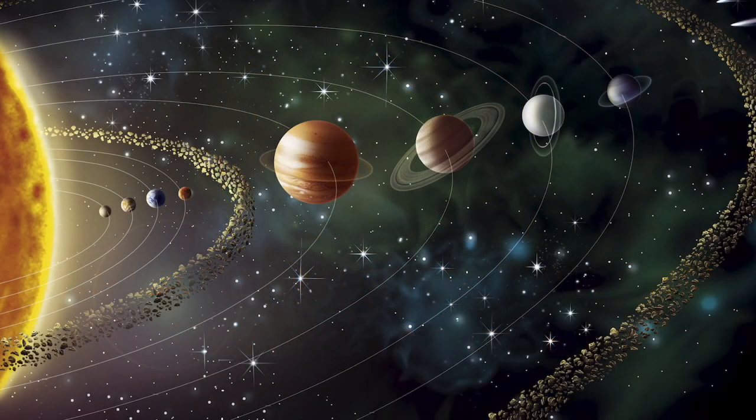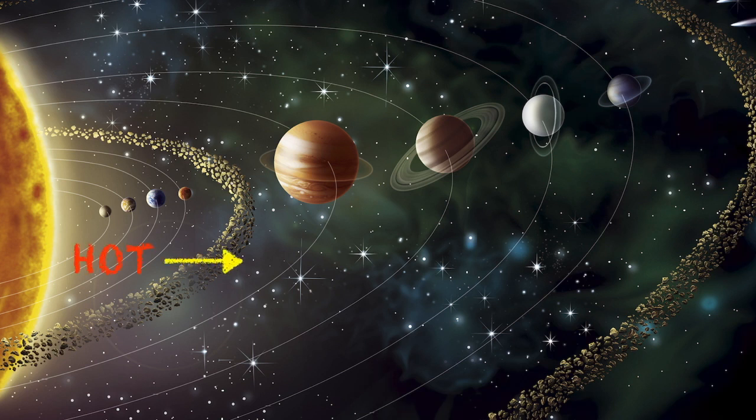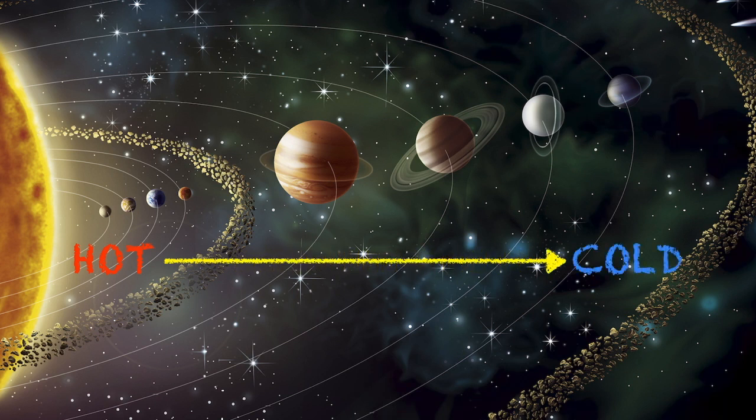We're going to start from the position that the only thing we know about the Earth is that it's in a solar system orbiting this very hot object called the Sun, which is constantly shining light on it. From this point of view, we would expect that planets that are closer to the Sun are hotter than planets that are further away from the Sun.